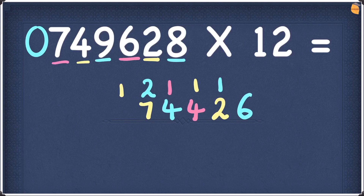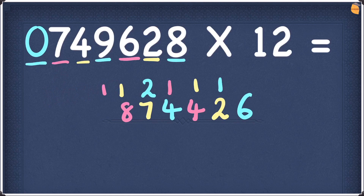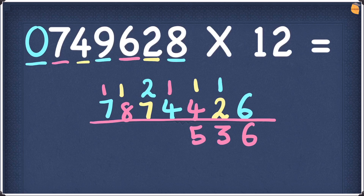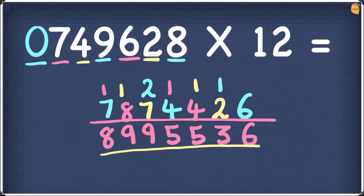Next digit is 7. 7 doubled is 14. Add the right hand side number 4: 14 plus 4 is 18. Write 8 and take 1 as carry. Final digit is 0. Doubling 0 is 0. 0 plus 7 is 7. Write a 7. Now adding up: 6, 2 plus 1 is 3, 4 plus 1 is 5, 4 plus 1 is 5, 2 plus 7 is 9, 8 plus 1 is 9, and 7 plus 1 is 8. So the answer is 8995536.